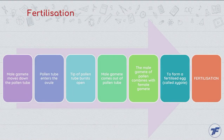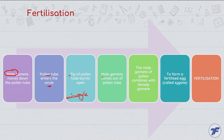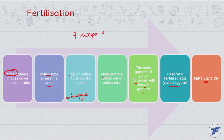So this is what fertilization is. Very briefly: male gamete moves down the pollen tube, pollen tube enters the ovule, tip of the pollen tube bursts open, male gametes come out of the pollen tube, and the male gamete combines with the female gamete to form a fertilized egg called zygote and fertilization occurs. This is 7 steps of fertilization.